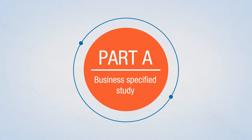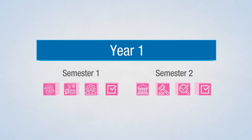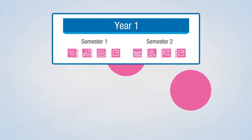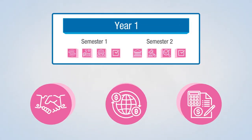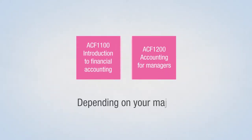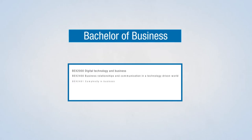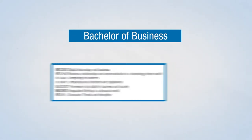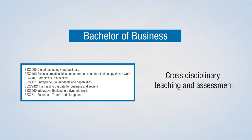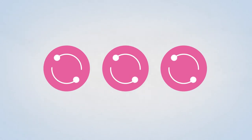Part A: Business Specified Study. Study your specified business introductory units in your first year. These are compulsory and introduce you to the different business disciplines. There are two different accounting introductory units depending on your major — you can check this on the handbook. In the Bachelor of Business, you will also need to complete an integrating unit. These units incorporate cross-disciplinary teaching and assessment to explore the synergies of each discipline and how these disciplines interact with each other.